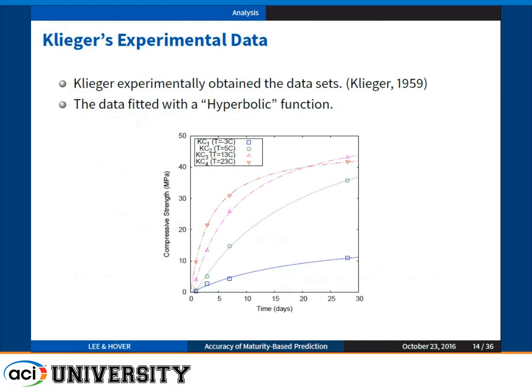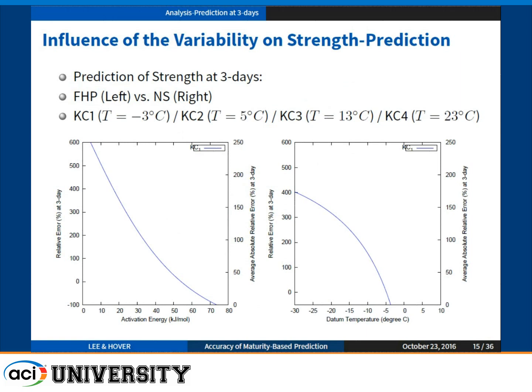The data I'm using is the Klieger experimental data, widely published for explaining temperature effects on strength property development. The left plot shows that depending on activation energy, the error at three days changes — starting from more than 600% relative error all the way down to negative 100%, depending on the activation energy variable. This is for the case where concrete temperature is about minus 3°C, using the FHP method. For the Nurse-Saul method, the relative error at three days changes from 400% all the way down to minus 50% depending on datum temperature.